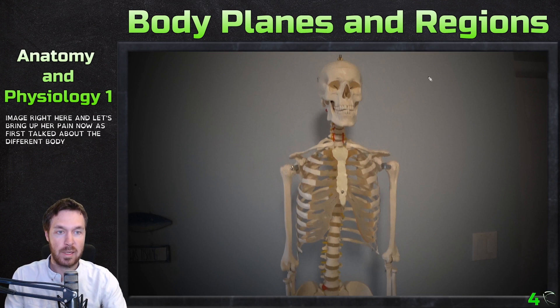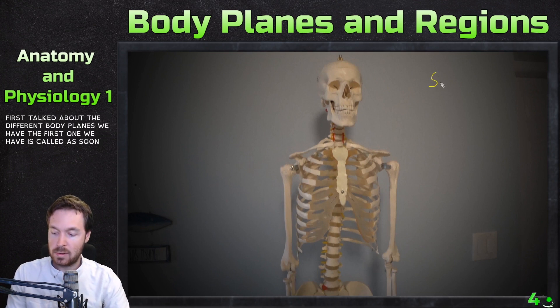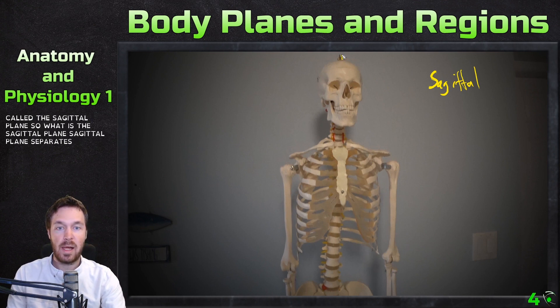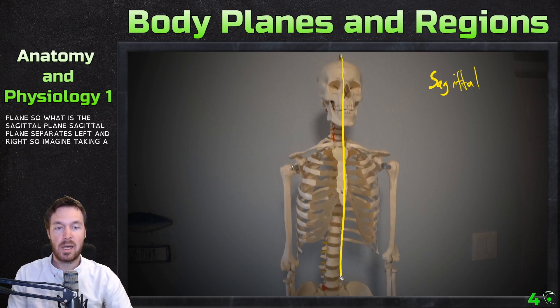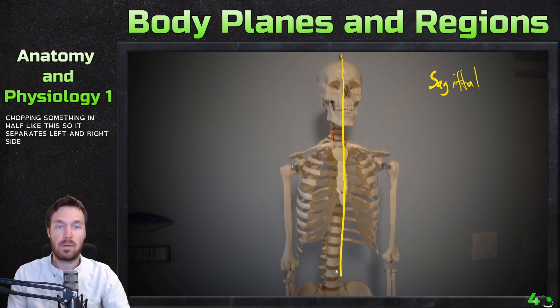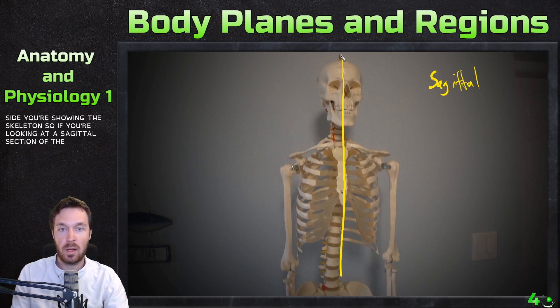Let's first talk about the different body planes. The first one is called the sagittal plane. What is the sagittal plane? The sagittal plane separates left and right. Imagine taking a section and actually chopping something in half like this — it separates the left and right side, here showing the skeleton. So if you're looking at a sagittal section of the skull...